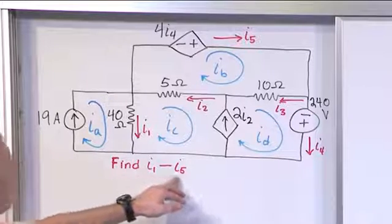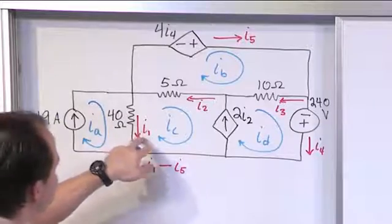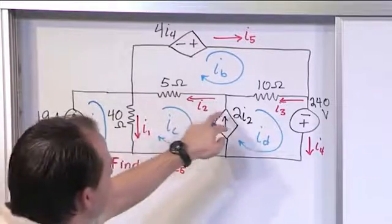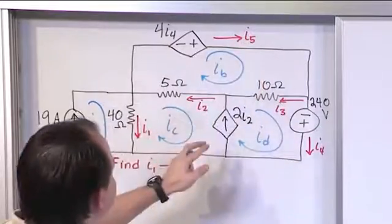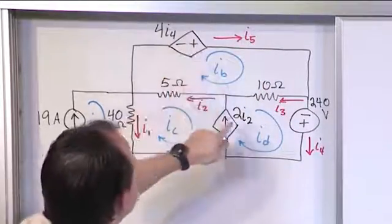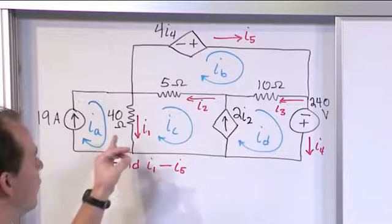We want to find the values of all of these currents that we have labeled. Notice that we have this guy I1, I2, I3, I4, I5. Some of these currents are actually used in the dependent sources to get their values. But what we're trying to find is calculate these currents. Right? One, two, three, four, and five.